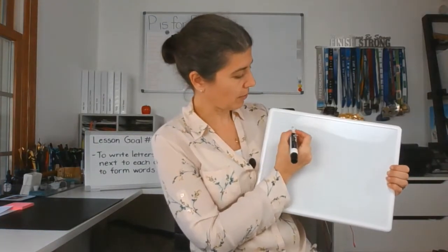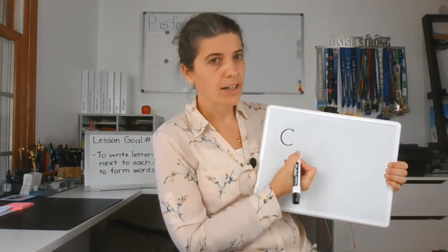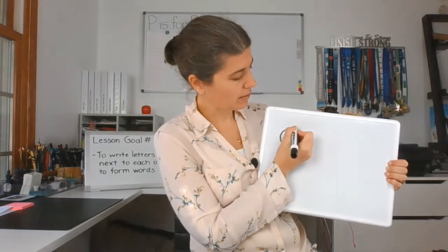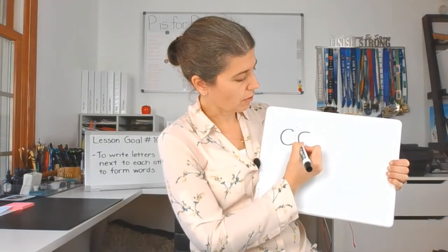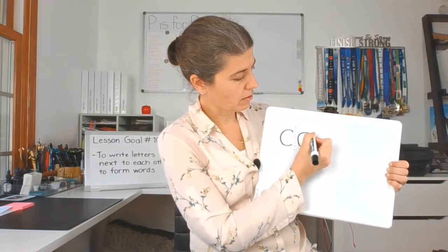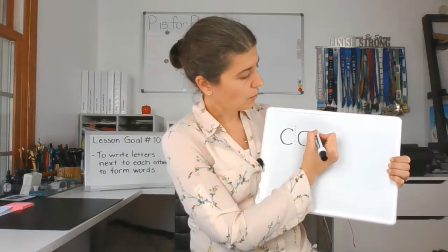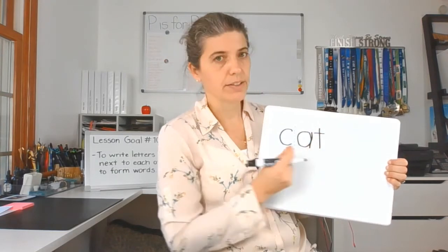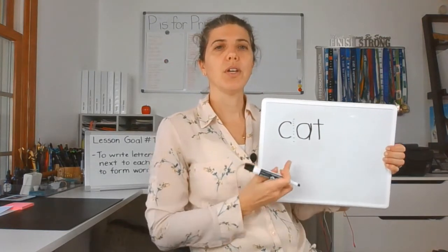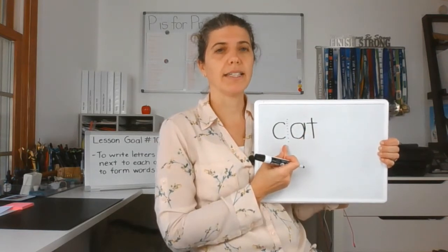Okay so let's say we're gonna write cat. Now you want to have like a little space in between because you don't want your letters to connect. But you don't want to be too far away where there's too much space. So as you write you're gonna practice writing different letters next to each other to make words. See how my A and my T have less space than my C and my A.